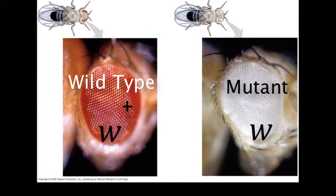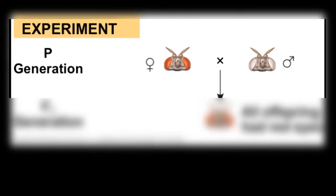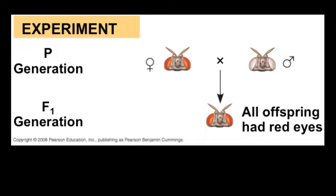In his first famous experiment, he crossed the white-eyed male with a wild type female. The F1 generation produced the predictable results, all red eyes. This is consistent with what Mendel would have predicted, suggesting that the wild type red eyes is dominant.